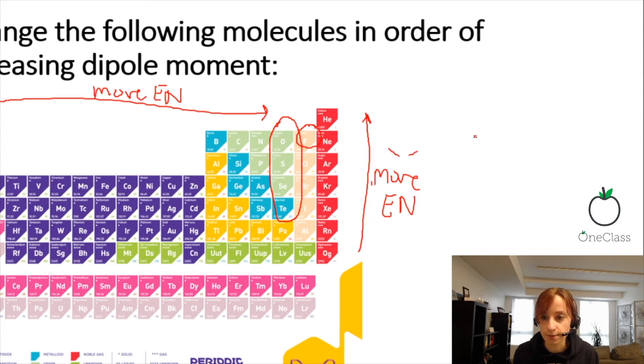What we need to consider now are the Lewis structures. We are taking into account H2Te, H2Se, H2S, and H2O.